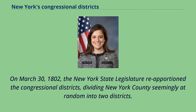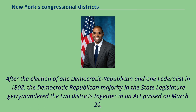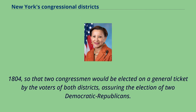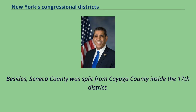On March 30, 1802, the New York State Legislature reapportioned the congressional districts, dividing New York County seemingly at random into two districts. After the election of one Democratic-Republican and one Federalist in 1802, the Democratic-Republican majority in the state legislature gerrymandered the two districts together in an act passed on March 20, 1804, so that two congressmen would be elected on a general ticket by the voters of both districts, assuring the election of two Democratic-Republicans. Besides, Seneca County was split from Cayuga County inside the 17th district.